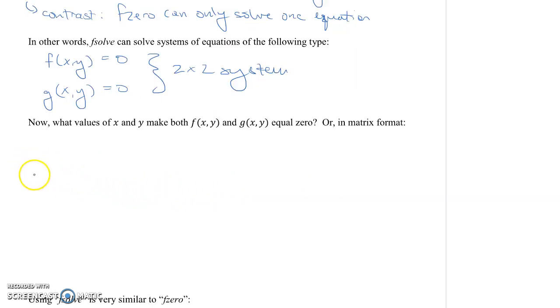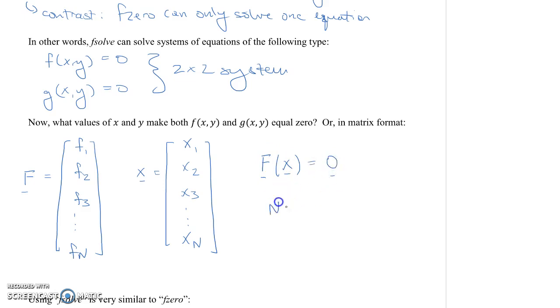Or, in matrix format, you might have a vector F which consists of many functions: F1, F2, F3, dot dot dot, Fn. And then you might have an independent variable vector X, which consists of X1, X2, X3, dot dot dot, all the way up to Xn. So in that case, the system of equations that you're solving can be compactly written as the vector F of the vector X equals the zero vector. And this, again, would be like an n-by-n system.